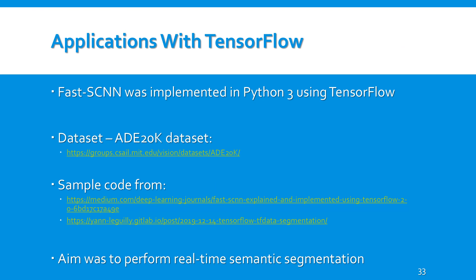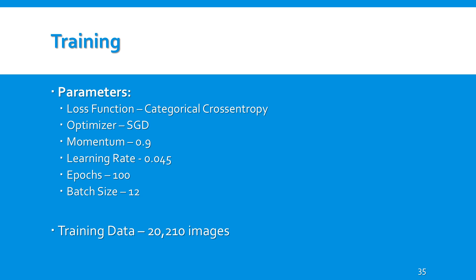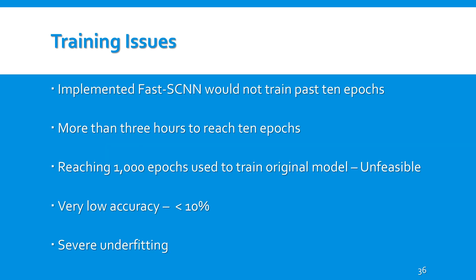I implemented the Fast SCNN model in Python using TensorFlow, using the ADE20K dataset along with some sample code to perform real-time semantic segmentation. I used the ADE20K dataset because it contains RGB images fully annotated with diverse scenes, objects, and parts of objects, and it has been used before as a benchmark for several baseline semantic segmentation models. The training set consisted of 20,210 images with the validation set reserved for testing, since the ADE20K dataset does not have a test set. There were several training issues encountered, including not being able to train the implemented Fast SCNN model past 10 epochs, with the program taking hours to train.